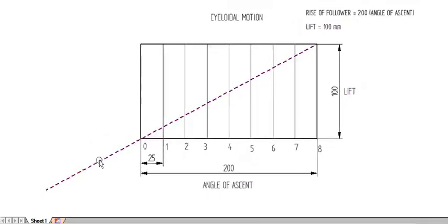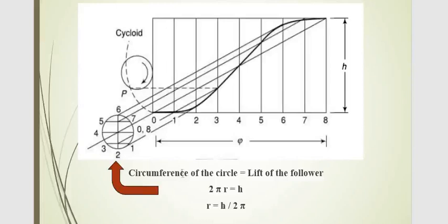Now I am going to construct a circle on this diagonal. For drawing cycloidal motion, we have to construct a circle on this diagonal. The condition for the circle is that the circumference of the circle should be equal to the lift of the follower — that means 2πr = h. So here 2πr = 100, therefore r = 100 / (2π) = 15.915 mm, and diameter = 31.83 mm.